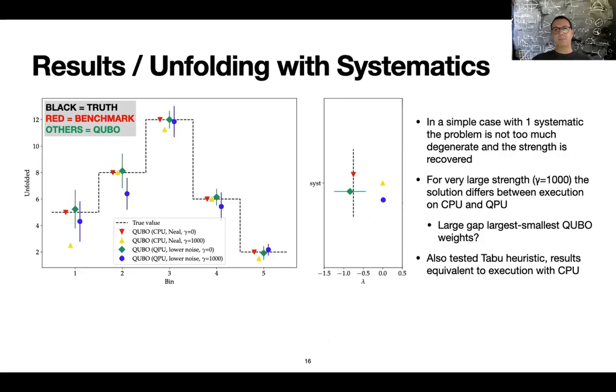So to begin with, it is possible to recover the solution. Interestingly enough, if we set the value of this gamma parameter to a very large number, the solution diverged. So you don't really find anymore the value of the systematic. Now it's not completely clear why this is the case, but our understanding is that there is a large gap between the largest and the smaller qubit weights. And so the granularity of the solution is not enough to find a convergence towards a stable minimum.